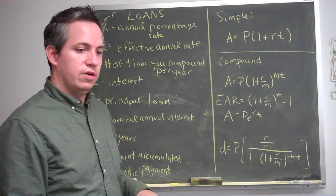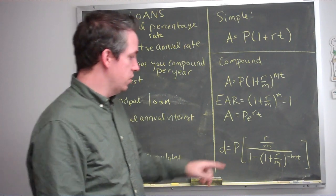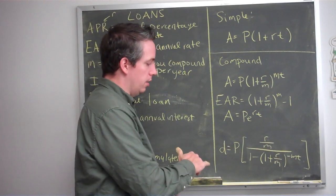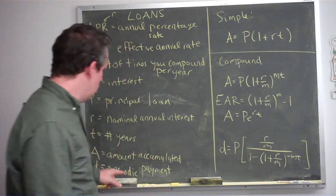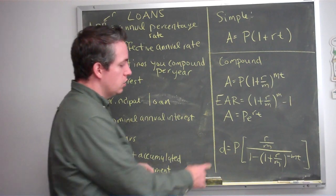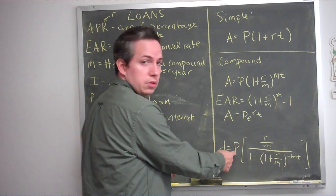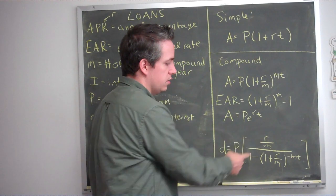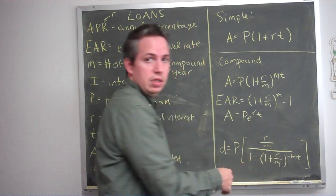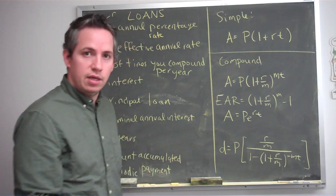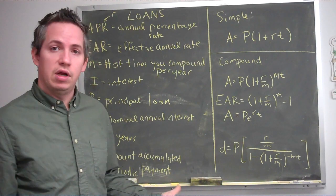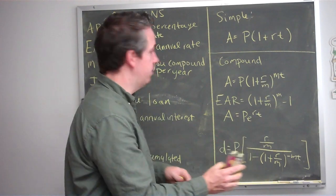The biggest difference between savings and loans is the last big formula, so I want to focus on that one. In this formula, you're looking at your periodic payment. Suppose you're paying off a loan with monthly payments. Your principal loan is how much money you take out, your interest rate is the same, but instead of MT in the exponent, you have negative MT — you're solving for your periodic payments. You know how much the car costs, and you need to figure out how much you'll pay per month.